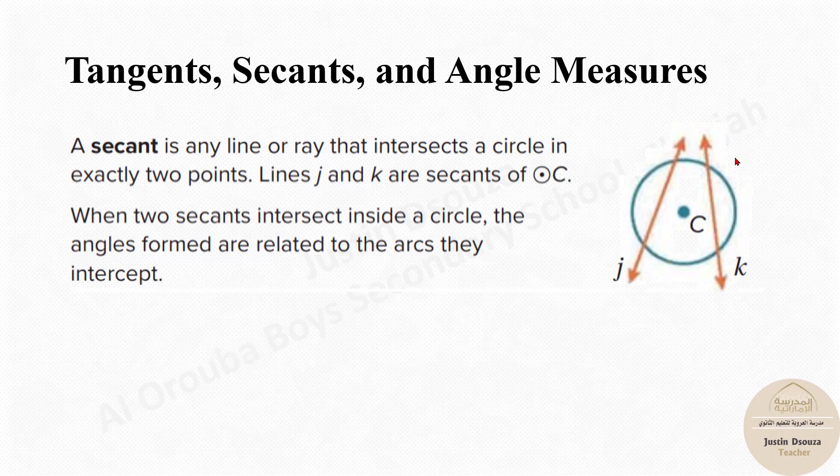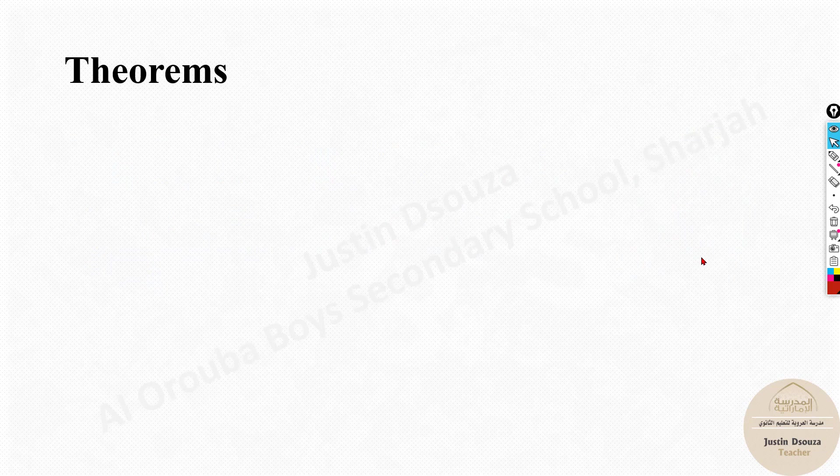What you need to remember is whenever secants are cutting a circle, arcs are formed. And based on how the secants are placed, there are different theorems because we can find the angles formed at various sections. Let's look into the theorems now.